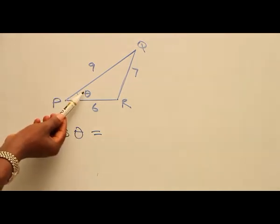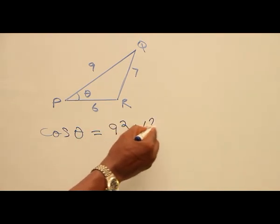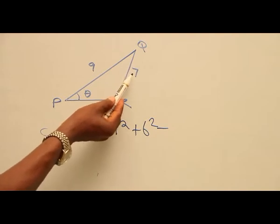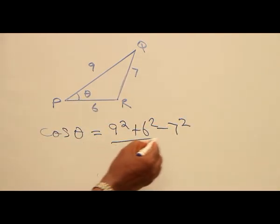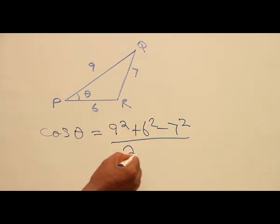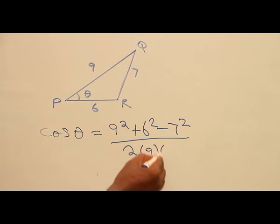The opposite side is 7, so that's 7². All of this is divided by 2 multiplied by the two sides, which is 9 times 6.